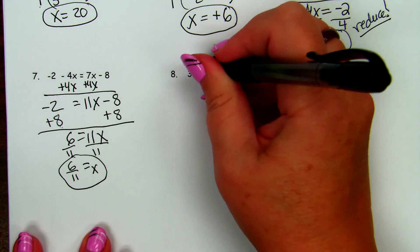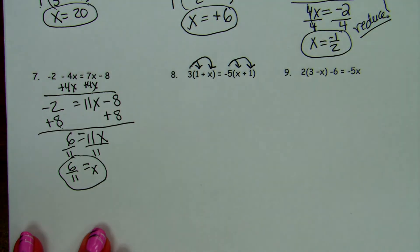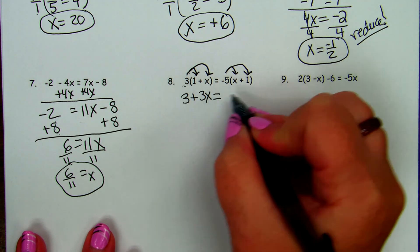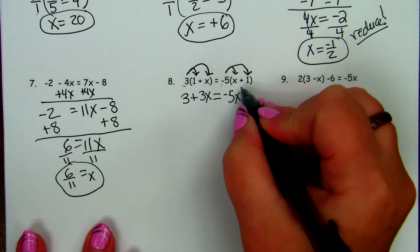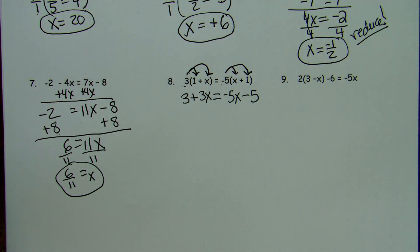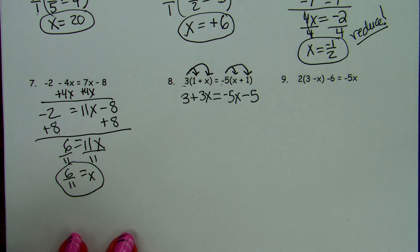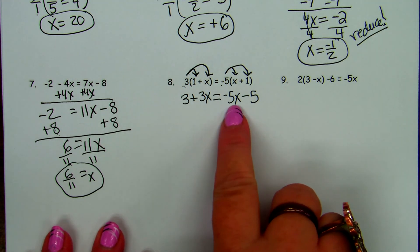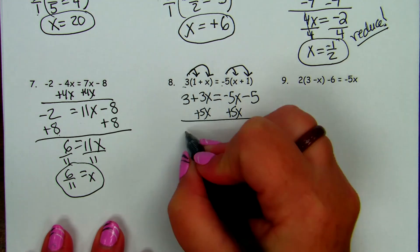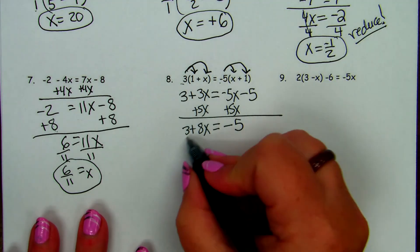Here we have some problems with parentheses, so we do the distributive property first. So 3 times 1 is 3, plus 3 times 1x is 3x. Negative 5 times 1x is negative 5x. Negative 5 times 1 is minus 5. And then we solve it just like problems 6 and 7. So do we want to subtract 3x from both sides so we get negative 8x? Or do we want to add 5x to both sides so we get positive 8x? You'll get the same answer either way, but I like to use positives.